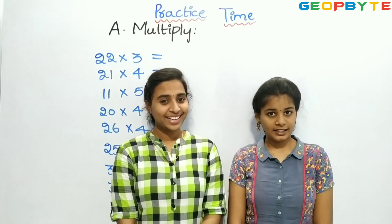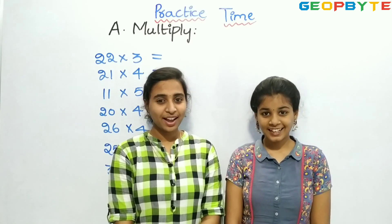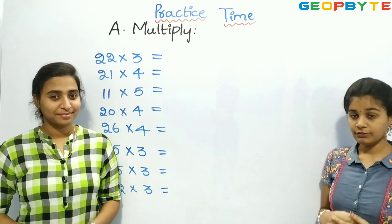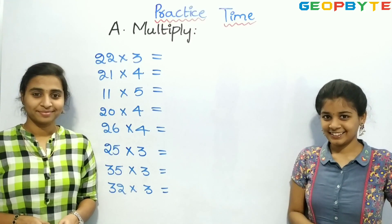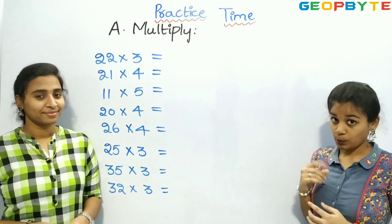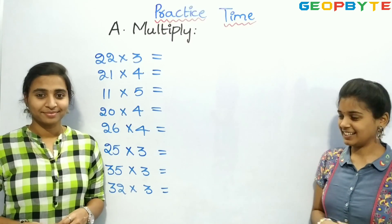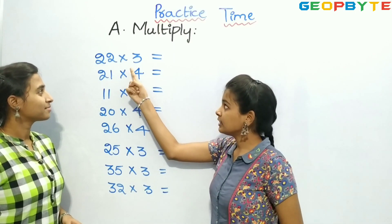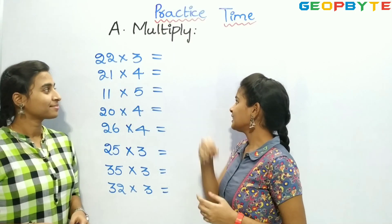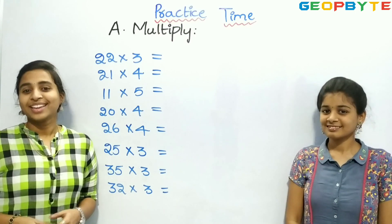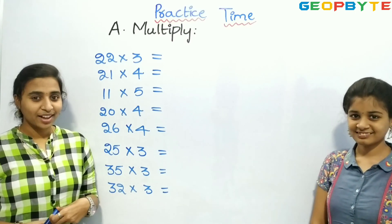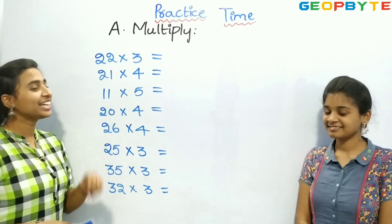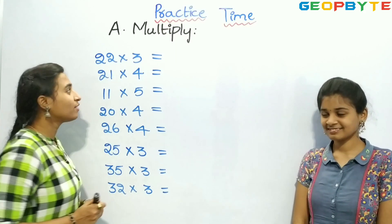Now it is practice time. Children, now we need to multiply. Let us see the questions one by one. The first one is 22 into 3 is equal to. Children, to find out the answer, first let us split this 22 for easier solving.